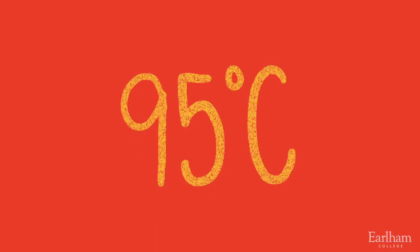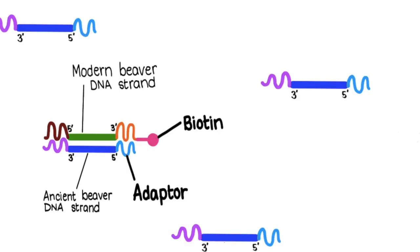By mixing the beaver baits with our ancient DNA, we created double-stranded sequences where one half was from the giant beaver and the other from a modern beaver.